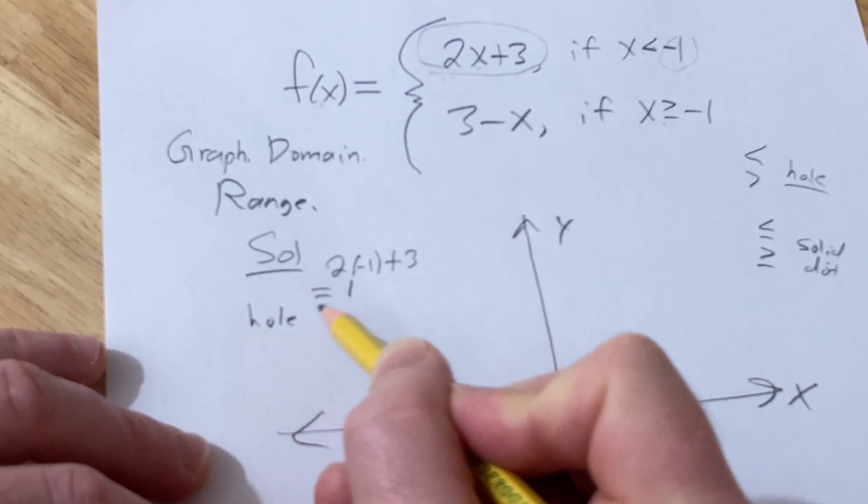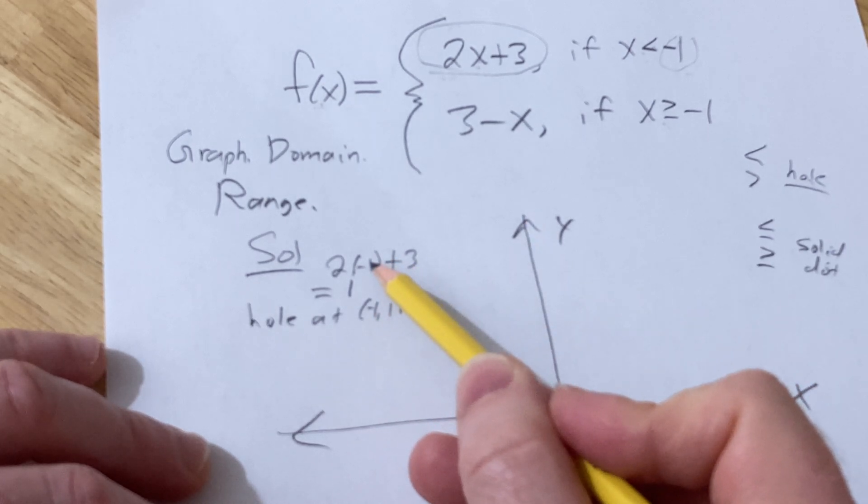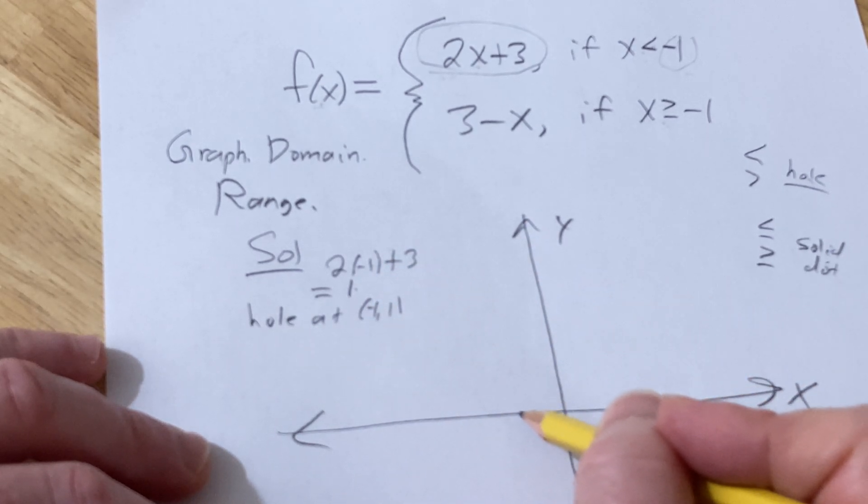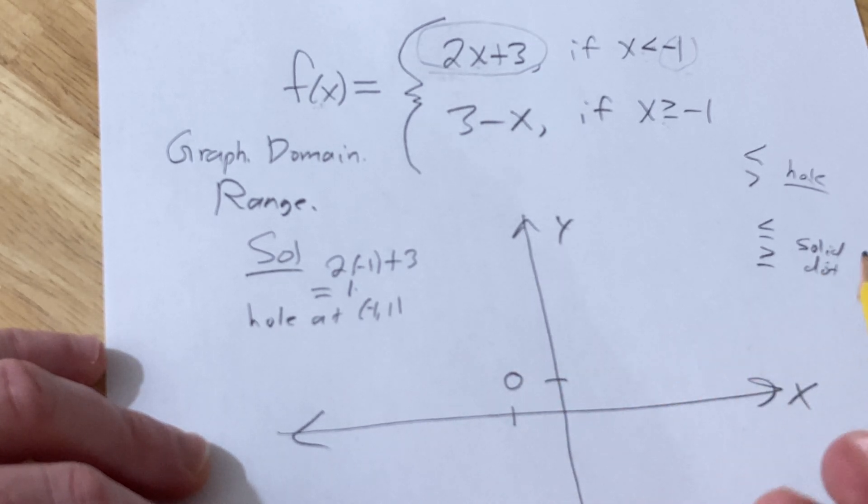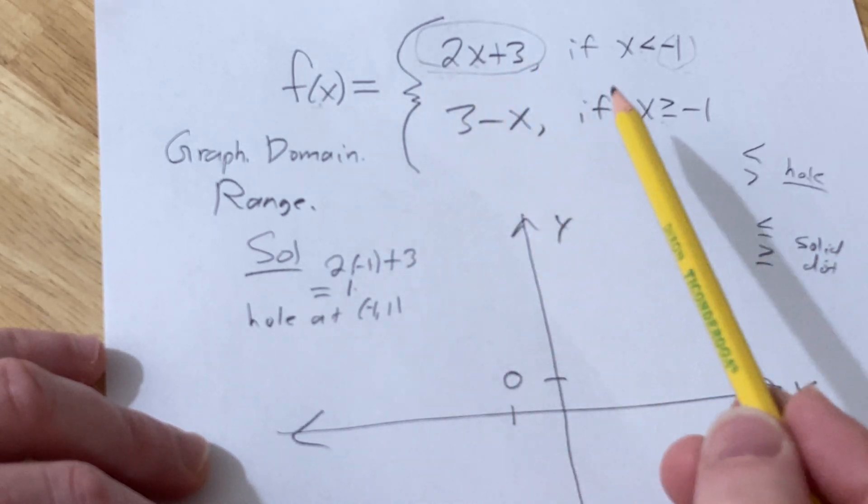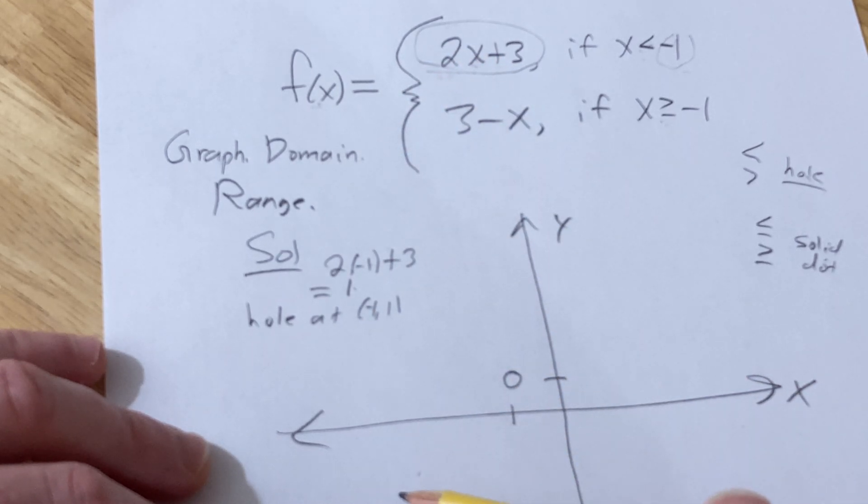So you have a hole at negative 1 comma 1, right? x is negative 1, y is 1. So we'll go left 1, up 1, and we have a little hole, okay? Now we can draw the rest of the line. Now this line has a positive slope, that means it's going to look like this, it's just going to go this way.